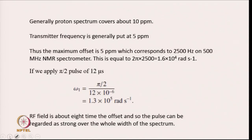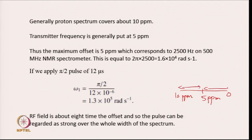If you are looking at the proton spectrum, it covers about 10 ppm, going from 0 to 10 ppm. In that case, the transmitter frequency is generally put at 5 ppm, so the maximum offset is 5 ppm on both sides. This corresponds to 2500 hertz on a 500 megahertz NMR spectrometer — 500 into 5 equals 2500 — which is equal to 1.6 into 10 to the power 4 radian per second.